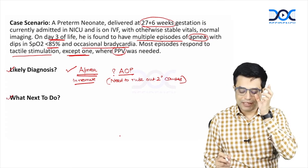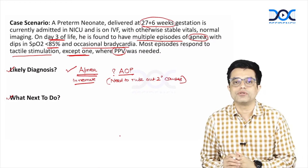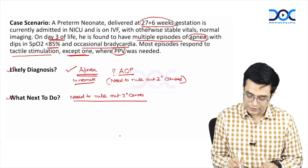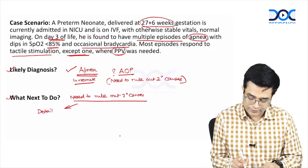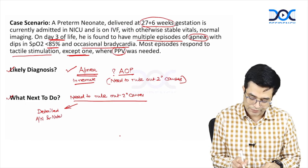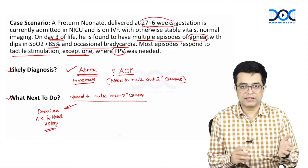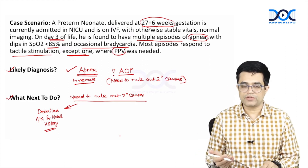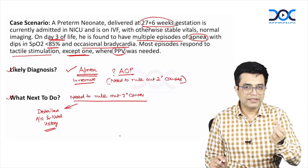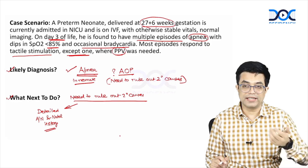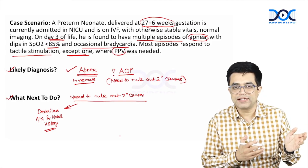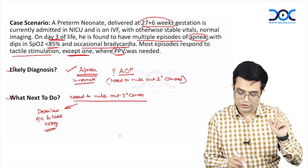What next will you do? Obviously, whenever you diagnose a child with apnea, you need to rule out the secondary causes. How are you going to do that? First, you will take a detailed antenatal and natal history. You did not attend the delivery — you are a resident who is managing. Was there any asphyxia? Was there any other risk factor in the mother, which can sometimes have a delayed presentation? Day 3 of life is not too far from birth. Anything likely to cause a problem — any asphyxia, delayed cry, low APGAR score, any imaging done or intervention needed — you need to review that. So, detailed antenatal and natal history is important.